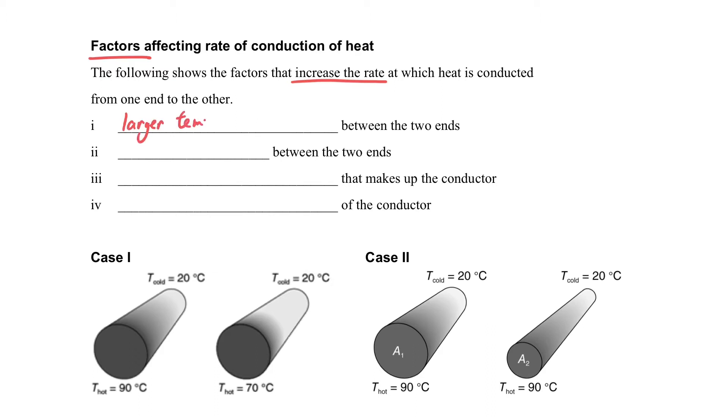The first factor is the larger temperature difference. So for example, if we want to transfer heat from one end of the object to the other end, if the temperature difference is larger, actually the rate of heat transfer will also be faster.